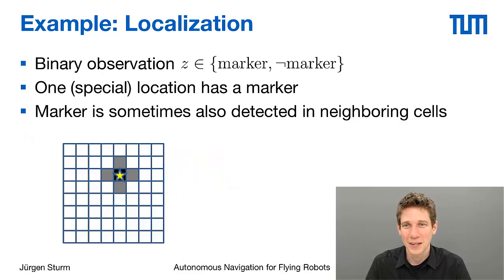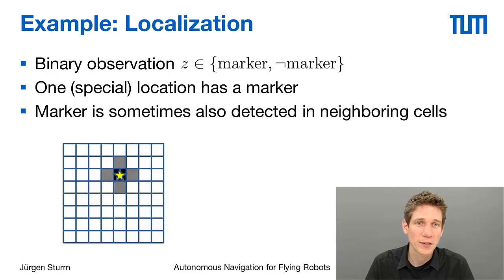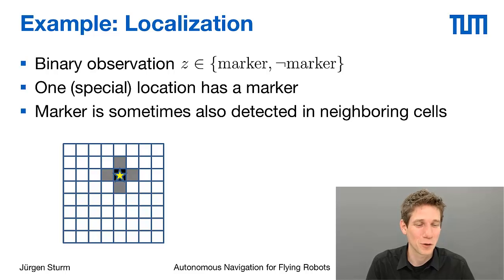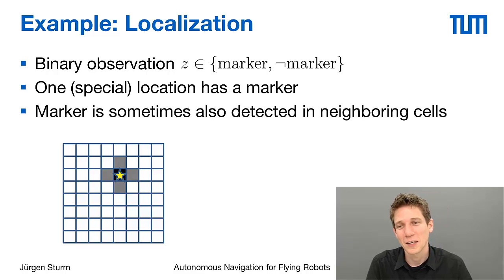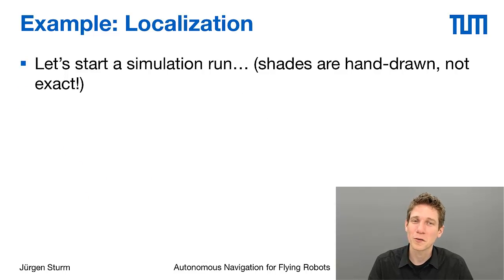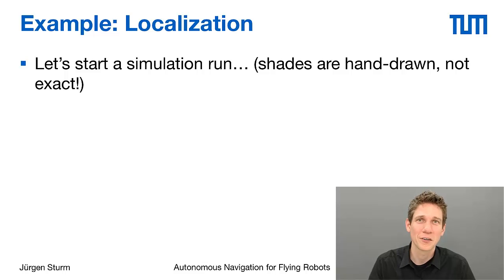We add a special marker to one particular cell, and the robot has a sensor that can detect this marker while moving around — think of it like the landing site lamps from earlier. Because everything is a bit noisy, the robot might also detect the marker when it is in one of the adjacent cells. Please note that in this hand-drawn simulation the shades don't perfectly reflect the likelihoods, but in the next video on the Kalman filter you will see real probabilities computed by a program.